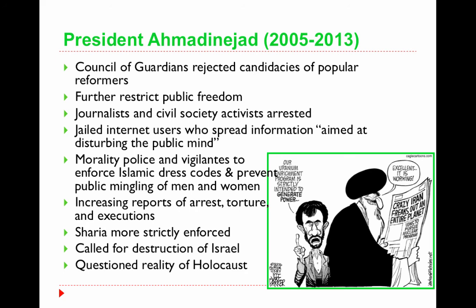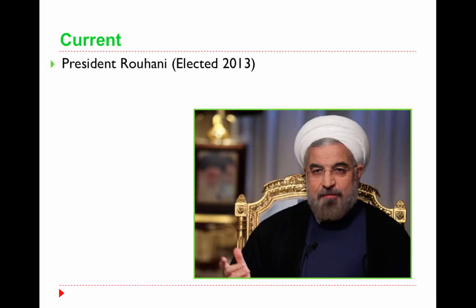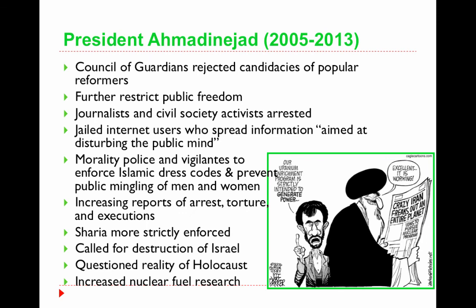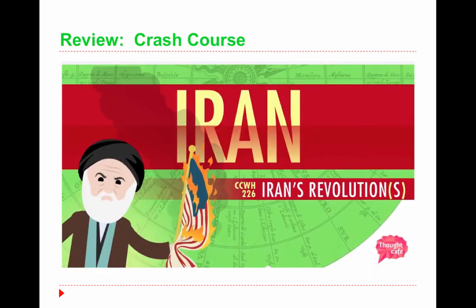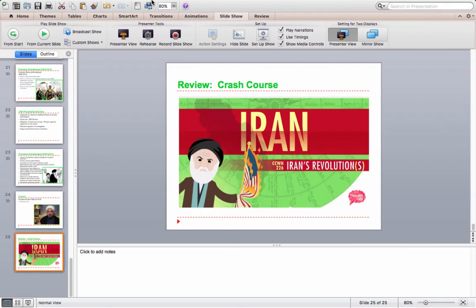In 2013, when Ahmadinejad's time in office ended, he had also increased nuclear fuel research. The current president is President Rouhani, elected in 2013 — a more moderate cleric. Ahmadinejad gets this reputation for all of those restrictions, whereas Rouhani has been much more moderate. I'm going to post the John Green video about Iran's revolutions on Canvas — highly recommended as an overview. If you have questions, write them down for class. Thanks for listening, and prepare well for your quiz.